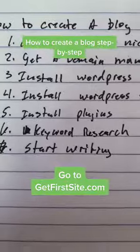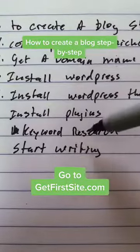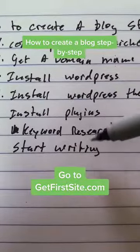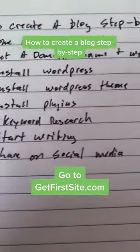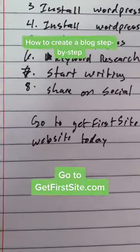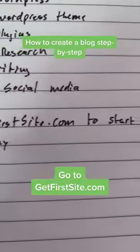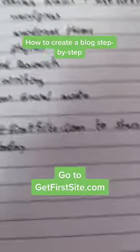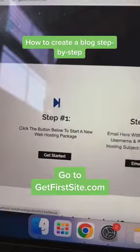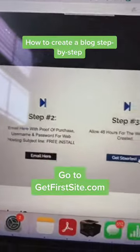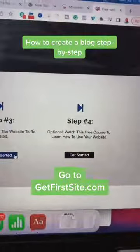Step seven: start writing. You're going to write based on the keywords that you found in the previous step. Step number eight: share on social media. Go to getfirstsite.com to have your first website created today. When you go to getfirstsite.com, you can actually have a website built for you in just four easy steps.